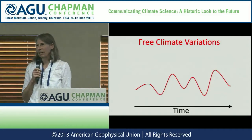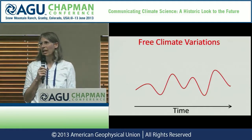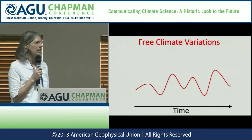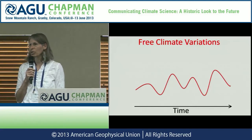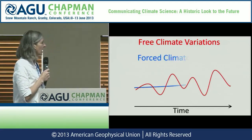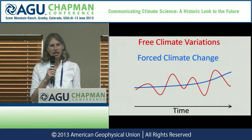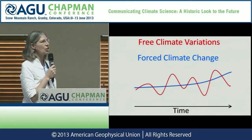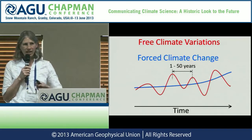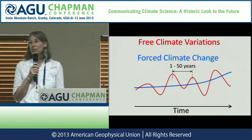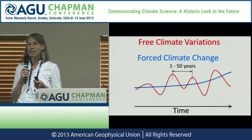We can think about temperature at a particular location — let's say Snow Mountain Ranch. If this is the record of temperature through time, we expect ups and downs just due to the natural variability that our climate system produces, because it is a chaotic system. We'll have periods of warming and periods of cooling. You can think of the forced climate change signal as being a background, slowly evolving change through time of temperatures here at Snow Mountain Ranch.